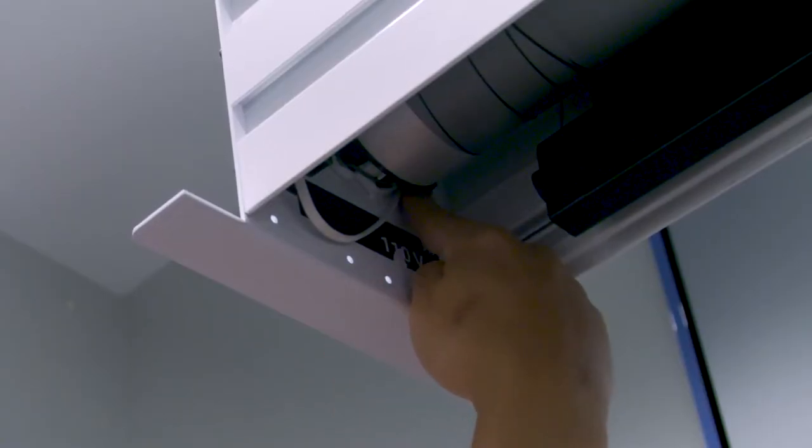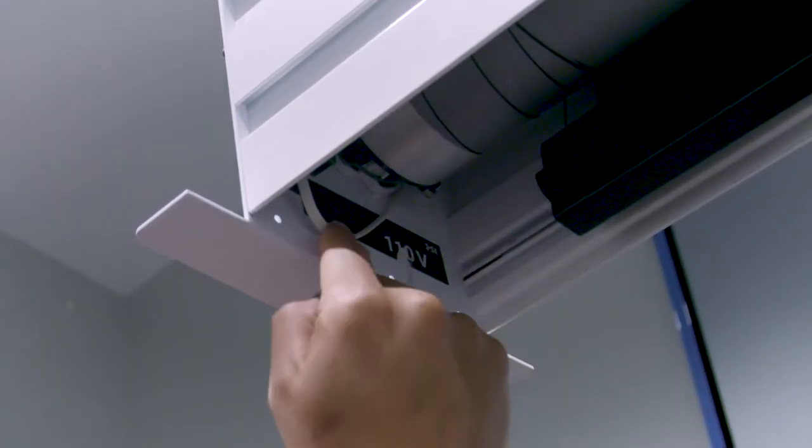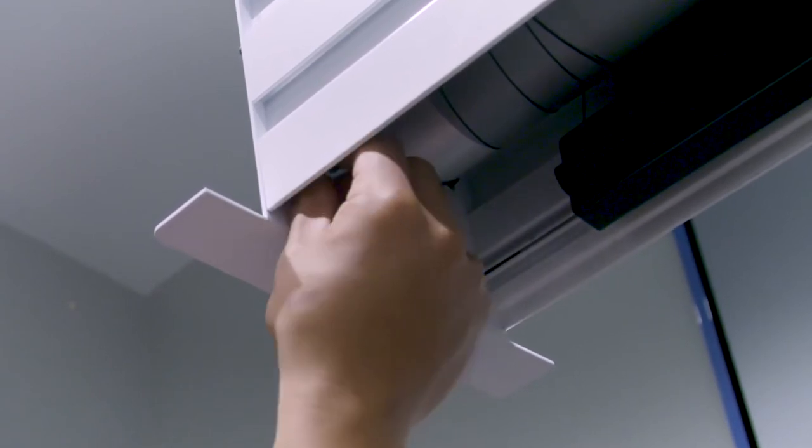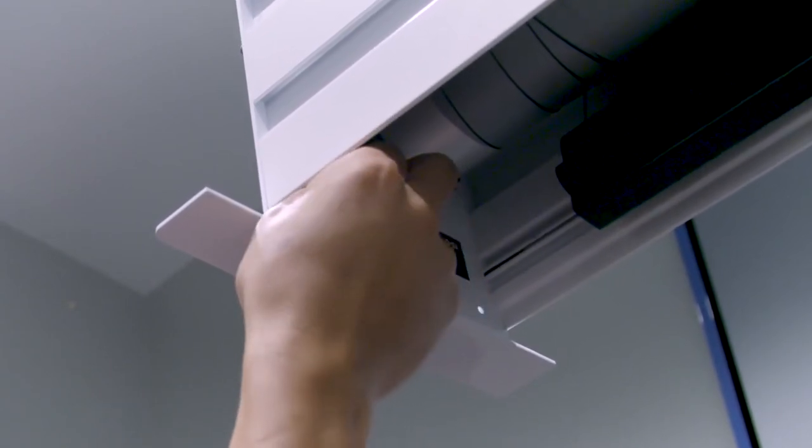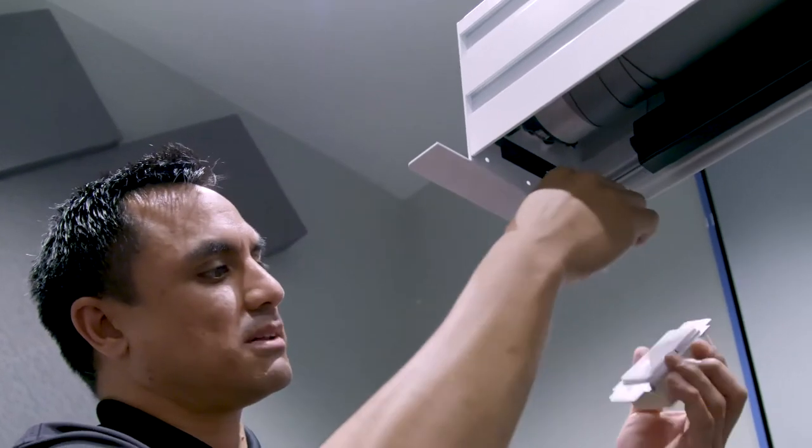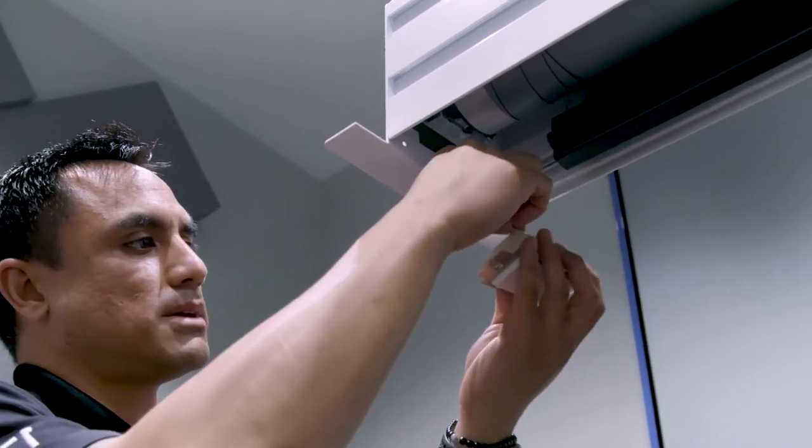We'll see a white data cable coming from the motor going into a gray jumper right at the bottom of the green circuit board. We're going to disconnect that from the board and plug that data cable directly into the back of the wall switch.